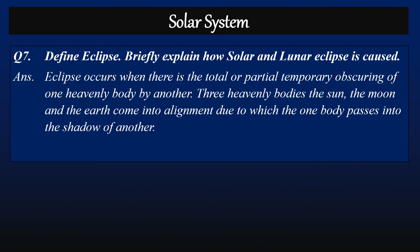Question seven: Define eclipse and briefly explain how solar and lunar eclipses are caused. Answer: An eclipse occurs when there is the total or partial temporary obscuring of one heavenly body by another. Three heavenly bodies — the sun, the moon, and the earth — come into alignment.